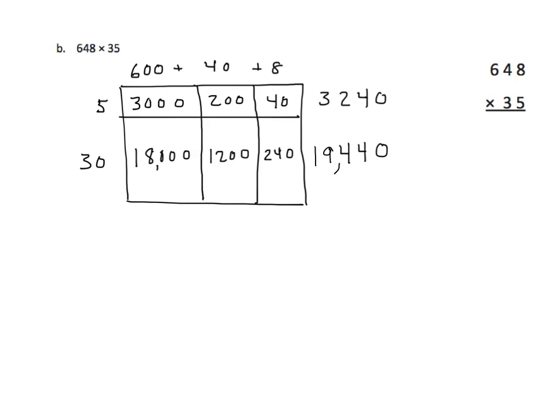5 times 8 is 40. 5 times 4 is 20, plus 4 is 24. 5 times 6 is 30, plus 2 is 32. So we have 3,240, and we can see that that corresponds.